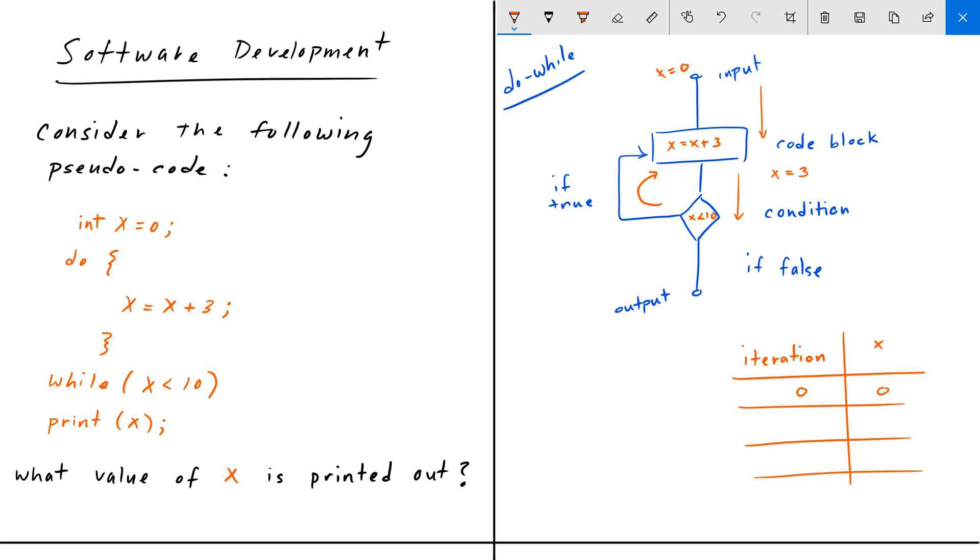And so on the first iteration, we had that X is equal to three. And now we're in our second iteration. Anytime we loop back to the top, that counts as an iteration. And so now the new value of X is three. So X is equal to three plus three. X now takes a value of six.